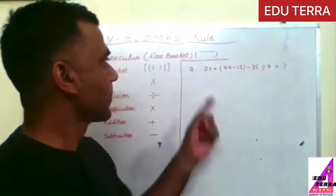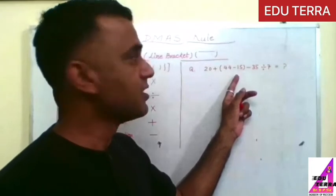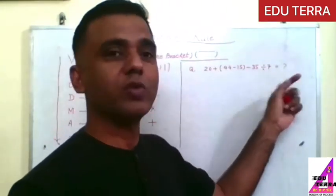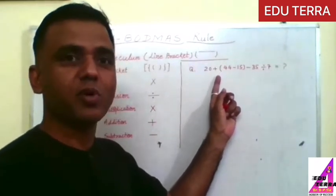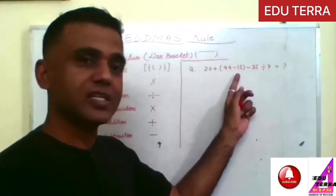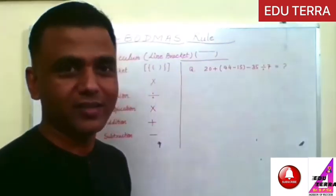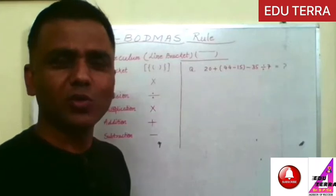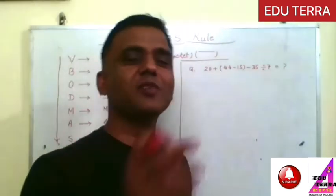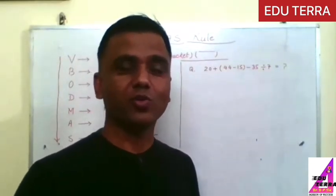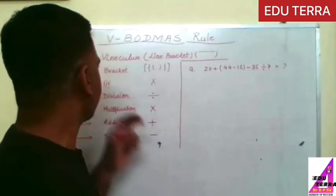So here I have taken a question. The question is 20 plus, in the bracket, 44 minus 15 minus 35 divided by 7 equals to question mark. So once again I am reading the question: 20 plus, this bracket is known as small bracket, in the bracket it is given 44 minus 15 minus 35 divided by 7. I explained already VBODMAS rule, so what will you do? Apply as per the sequence and you will get your answer 100% correct, but if you don't know this VBODMAS rule definitely you will do wrong.